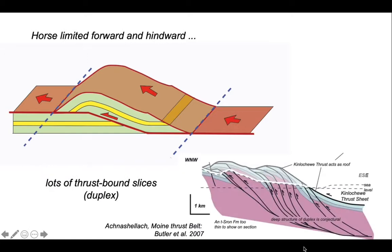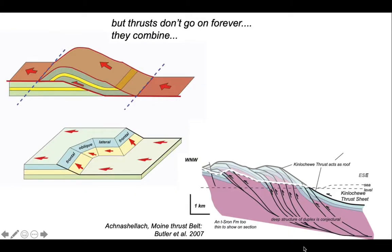Our cross section from the moine thrust belt shows lots of thrust bound slices. They all are limited front and back by their own branch lines. Collectively this is a duplex structure. But this diagram is somewhat simplified.